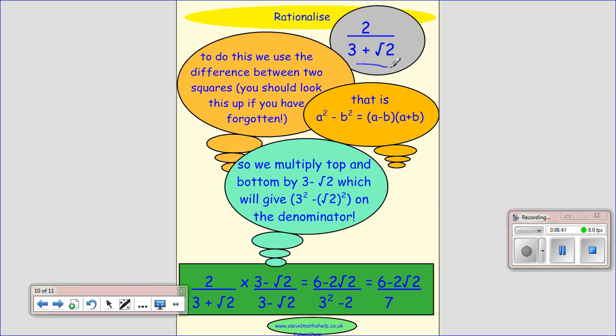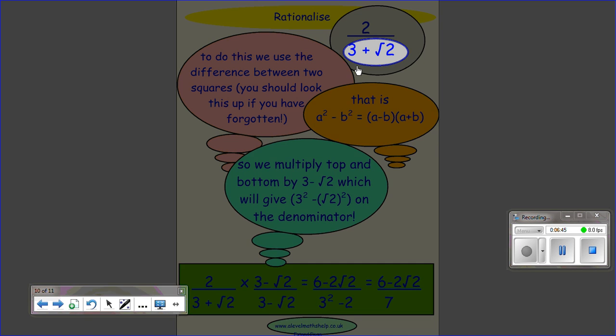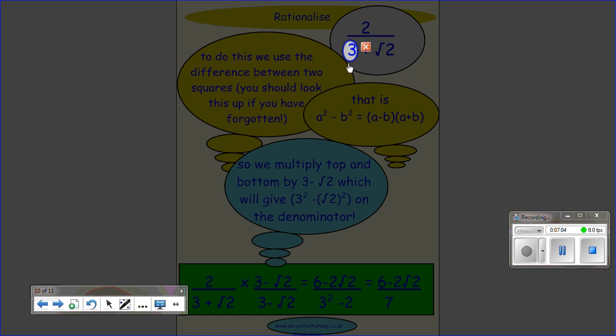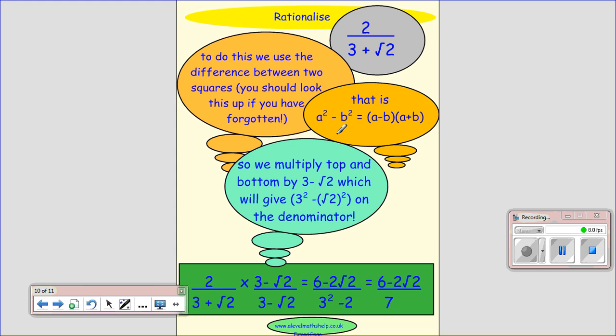So what we do to get rid of, again, we're trying to get rid of the surd in the denominator. We want to get rid of that root 2. If we square the root 2, we get 2, because the root times the root of the number gives you the number.